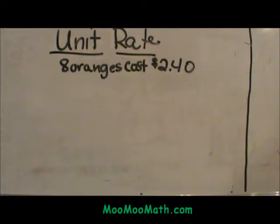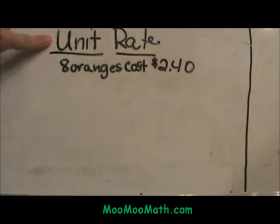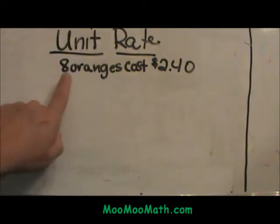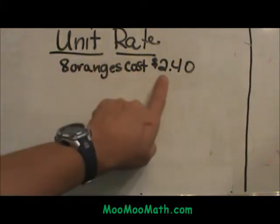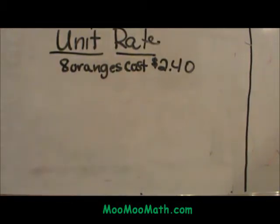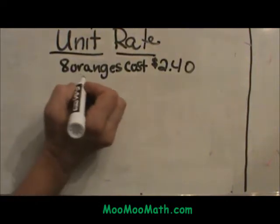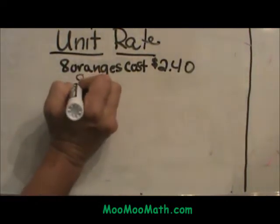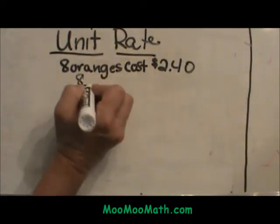Welcome to Moo Moo Math. Today we are going to talk about unit rate, or the cost of one item. Here is our example: if 8 oranges cost $2.40, what is the cost of one orange? We are going to set up a proportion.